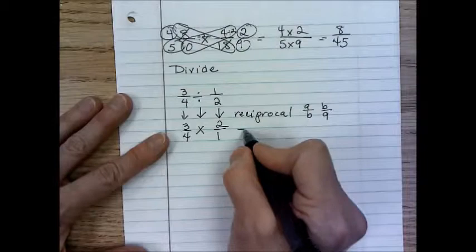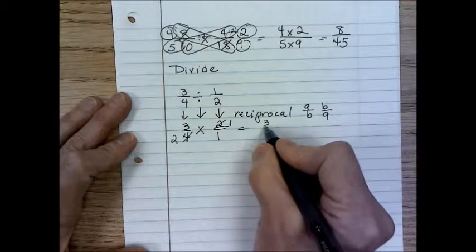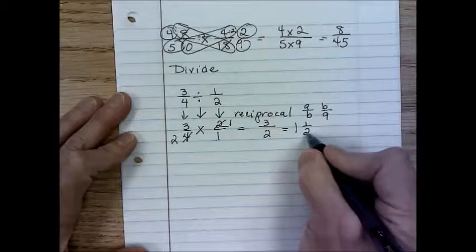Now we just look at this as a multiplication problem. So you could cross-reduce your two and a four. All right. And so if we divide by two, that would be a one. This would be a two. Three times one would be three. Two times one would be two. And that simplifies to one and one-half.